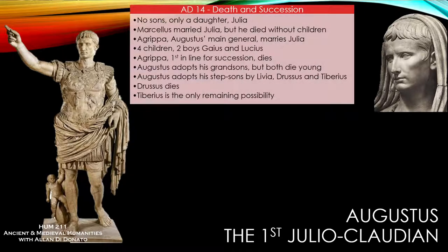He doesn't want to appear like a king — there's no tradition of passing your position as consul to family members after you. Part of the problem was he lived a very long time, not dying until AD 14. He didn't have any sons, which was part of the problem. He had a daughter, Julia, whom he married off to Marcellus — his sister Octavia's son, who was popular and adopted by Augustus — but Marcellus didn't produce any children with Julia and died before Augustus. Julia was then married off to Agrippa, Augustus's closest companion.